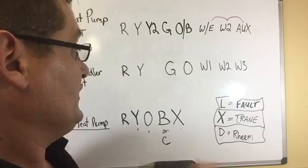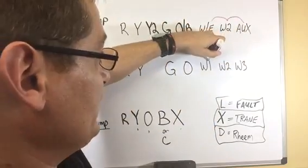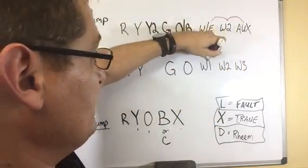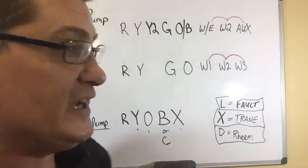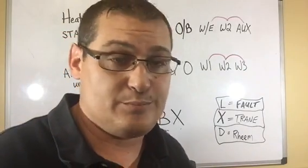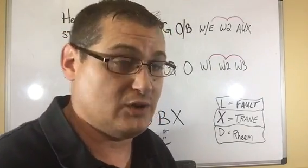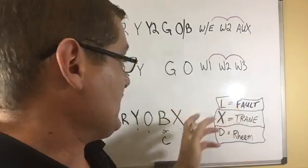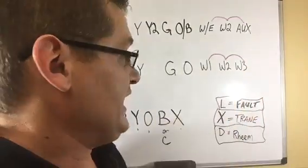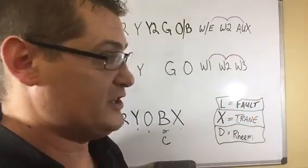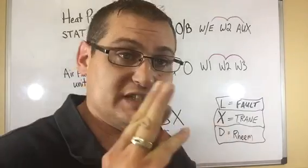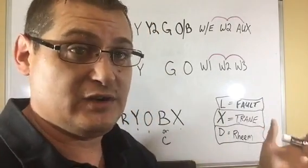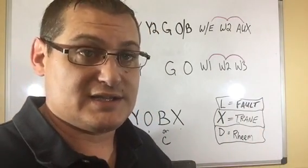At the thermostat or the air handler, if we've got W1, W2, W3, those are all just to power the strip heat. In certain Rheem units, this is what they actually had: W1, W2, W3. We just tied them all together with a wire nut and then hooked our white wire, because it's W from the stat, we would hook those up together.